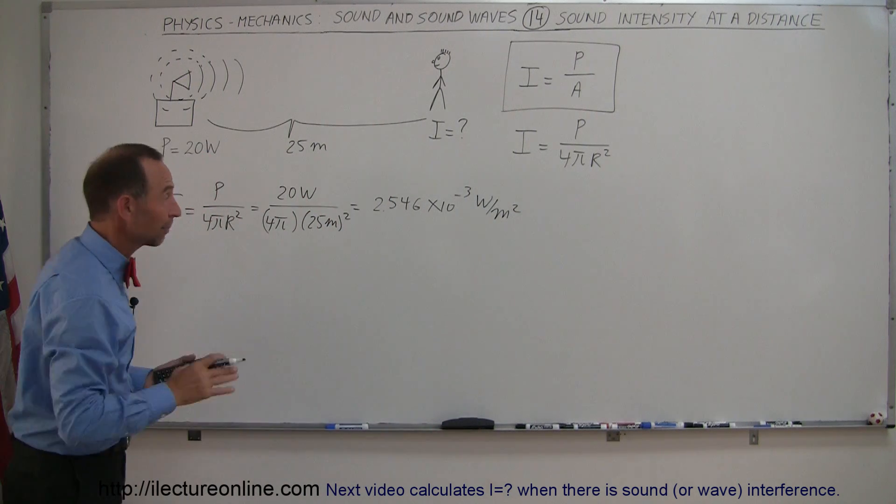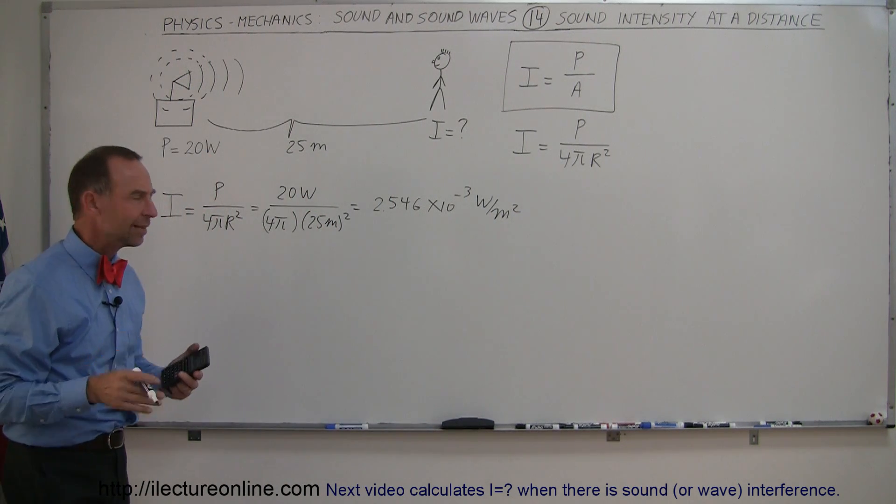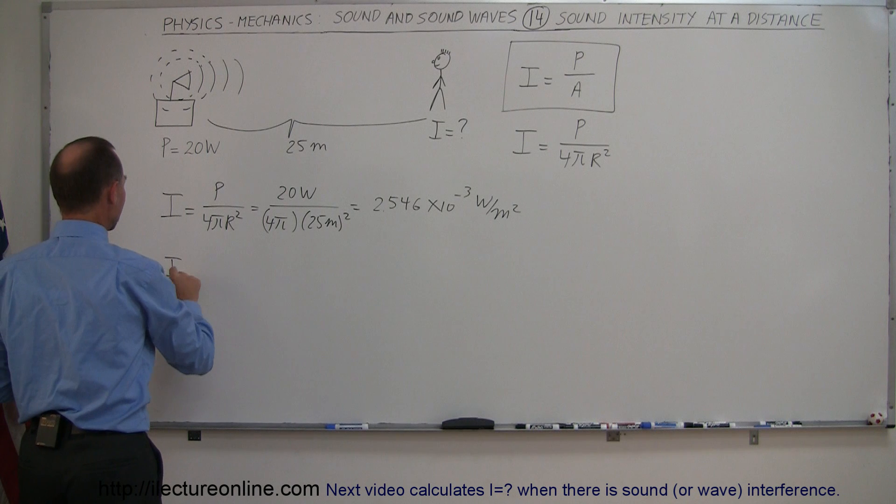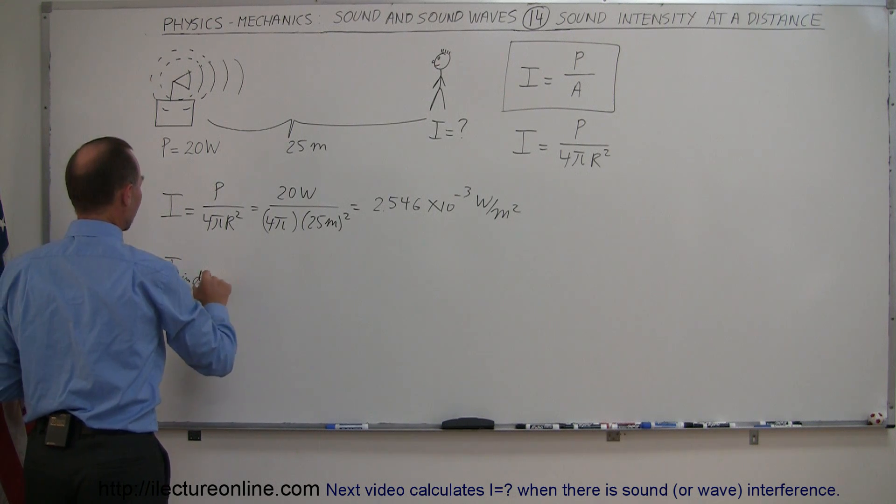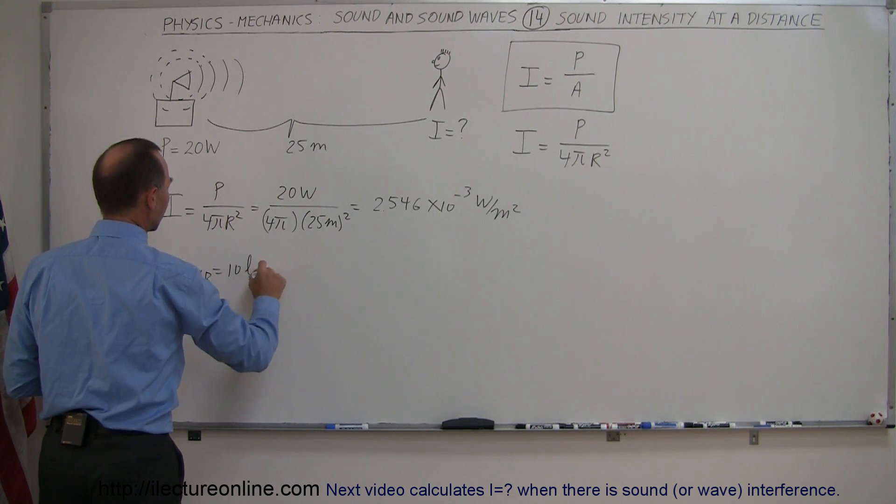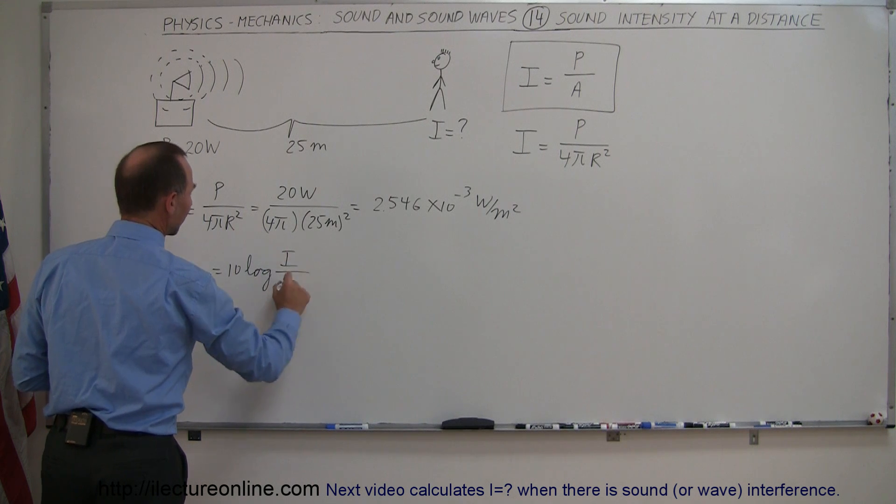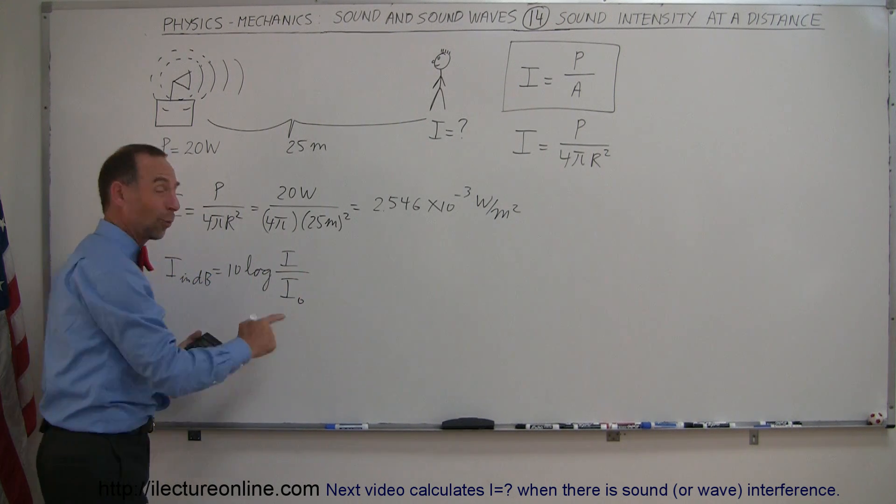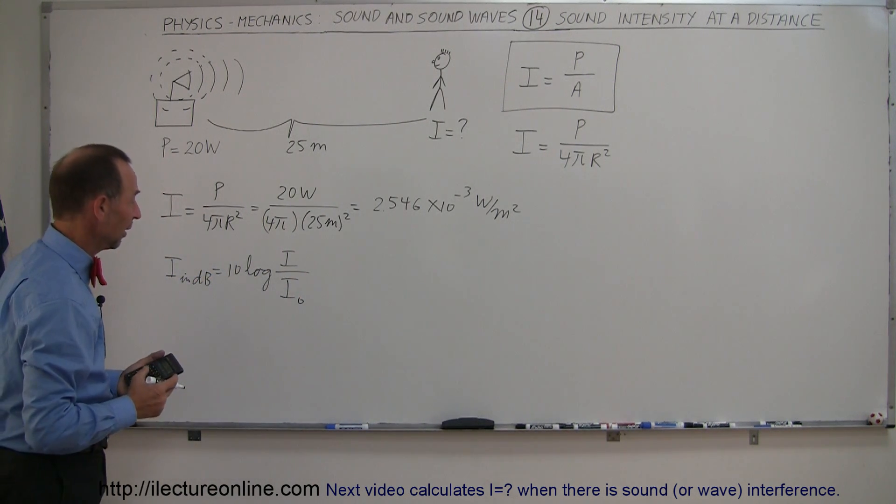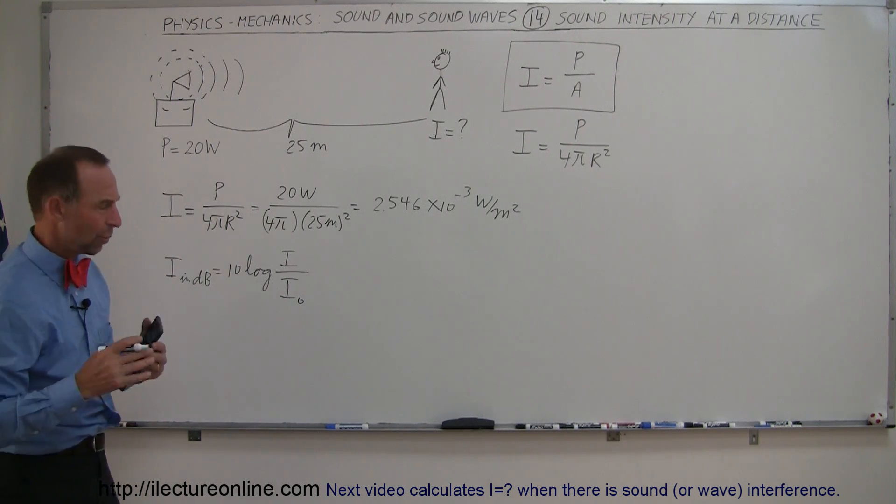Alright, so that's the intensity that person hears. Now what would that be in decibels? Well, intensity in decibels is equal to 10 times the log of the intensity that we hear divided by the reference intensity, which is 1 × 10⁻¹² watts per square meter. That's the threshold of sound.